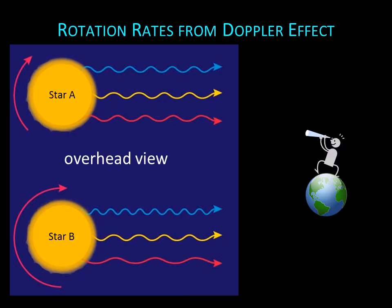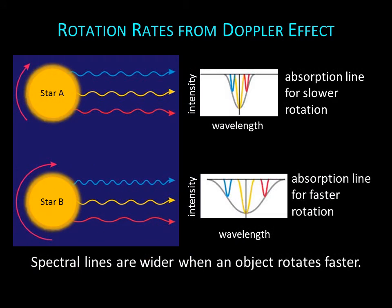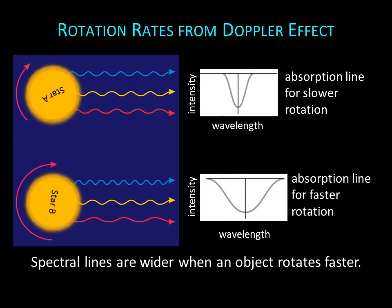The Doppler effect can also be used to determine rotation rates. Imagine a rotating planet or star — as it rotates, one edge is moving toward us and one edge is moving away. The edge moving toward us is blue shifted, and the edge moving away is red shifted, while the center has no Doppler shift. The net effect, when looking at the whole rotating star at once, is to make each spectral line appear wider than it would if the object were not rotating. The faster the object is rotating, the broader the spectral lines become, allowing us to determine the rotation rate of a distant object.